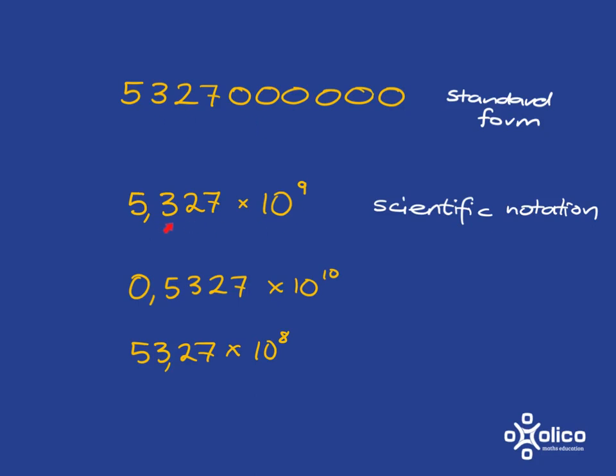So all these four are exactly this number. Now this number, a good old normal number, we're going to call it being written in standard form. When we write it like this we're going to say it's in scientific notation.